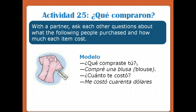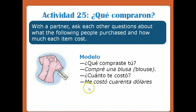Here's a little partner activity from your textbook. The model: ¿Qué compraste tú? — What did you buy? Compré una blusa — I bought a blouse. ¿Cuánto te costó? — How much did it cost you? Me costó cuarenta dólares — It cost me forty dollars. This brings together the preterite, question words like cuánto and qué, and indirect object pronouns. Hasta luego — getting closer to the end!